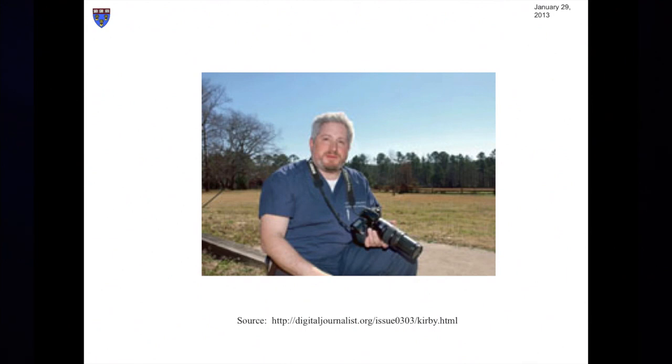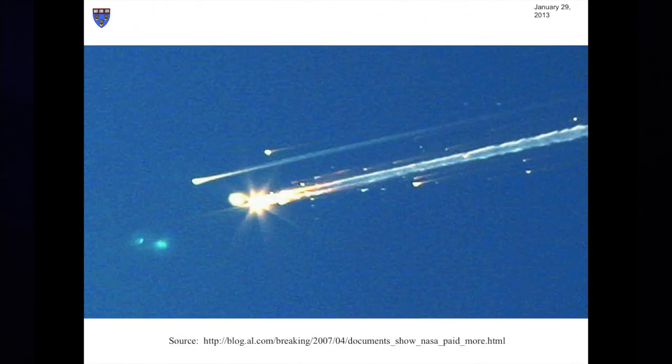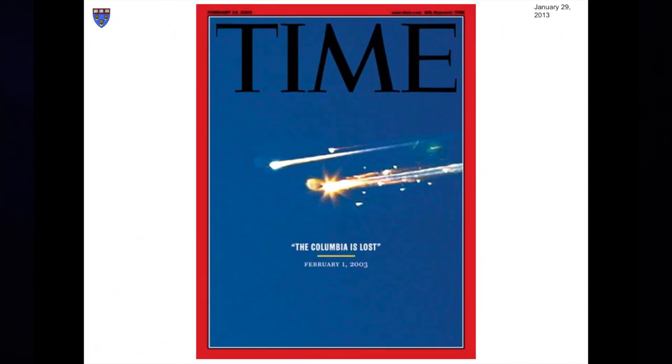He and his wife went out into the yard and pointed their cameras at the sky. As it happened, this was just the moment when the Columbia began to break apart. One of Lieberman's images captured that horrific incident. He submitted the photo to the local newspaper, which in turn forwarded it to the Associated Press. By the next afternoon, Lieberman's photo was on the cover of Time magazine. As you know from the first lecture, as a matter of copyright law, Lieberman surely is entitled to a copyright in his photograph.